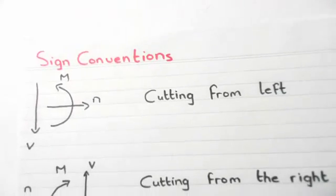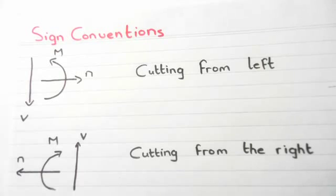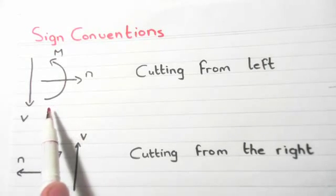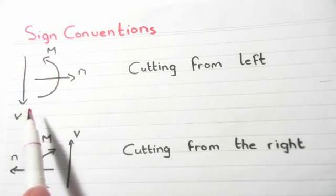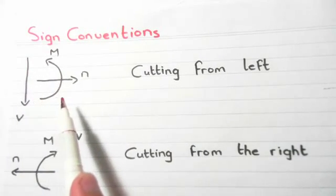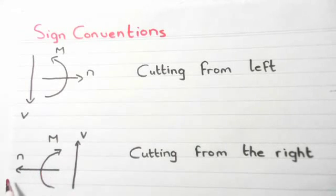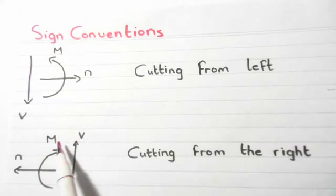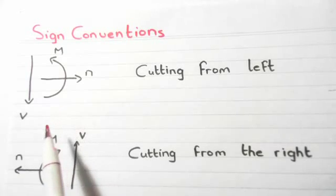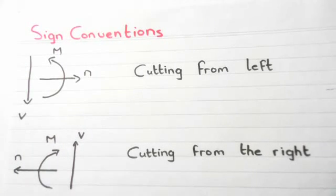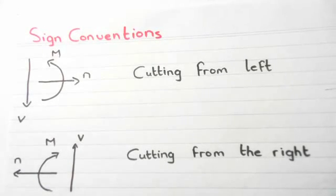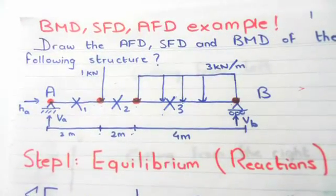Now we explain the sign convention. When cutting from the left: shear force points down, moment is anti-clockwise, and axial force points to the right. When cutting from the right: axial force points to the left, moment is clockwise, and shear force points up. This consistent sign convention will be used throughout the course.